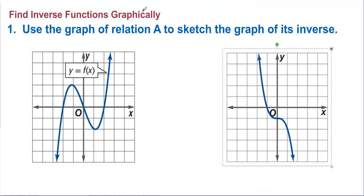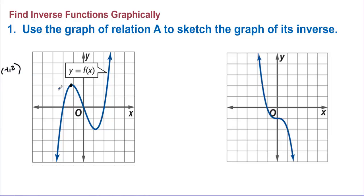Find inverse functions graphically: use the graph of a relation to sketch the graph of its inverse. In the first example, we have the point (negative 1, 2) on the original, so the inverse contains (2, negative 1). That point goes to (2, negative 1) on the inverse graph.